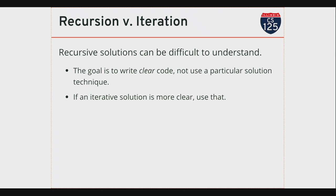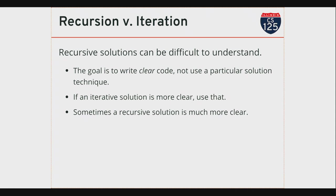If an iterative solution is more clear, use it. If a recursive solution is more clear, use that. That's the simplest way to make this tradeoff—it's simple in the sense that it's an easy principle, but this is hard to apply. This is why people tend to be either all-or-nothing about recursion. Applying this discretion is difficult and it'll take some practice and experience.